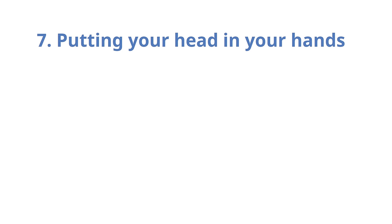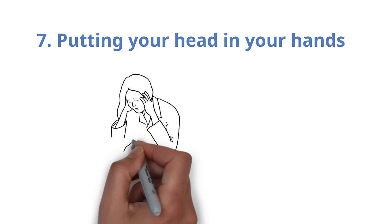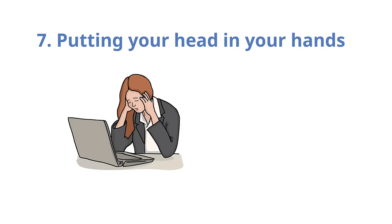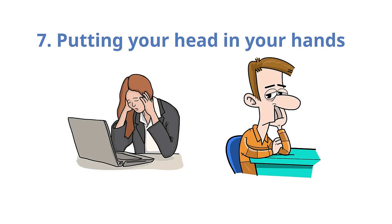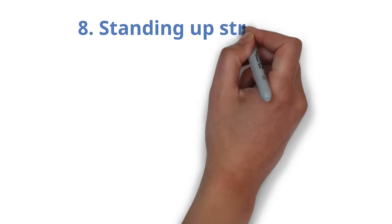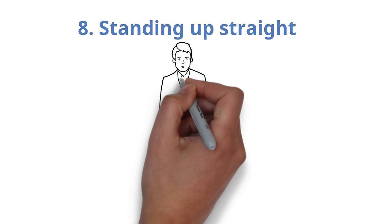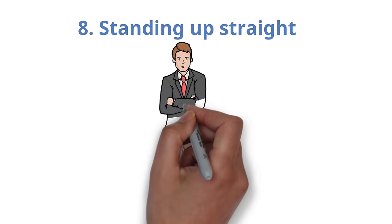Number 7. Putting your head in your hands. When you put your head in your hands, it might indicate that you're bored, as if you've had enough of life and simply can't stand it any longer. Number 8. Standing up straight. Standing erect with good posture shows you feel confident.